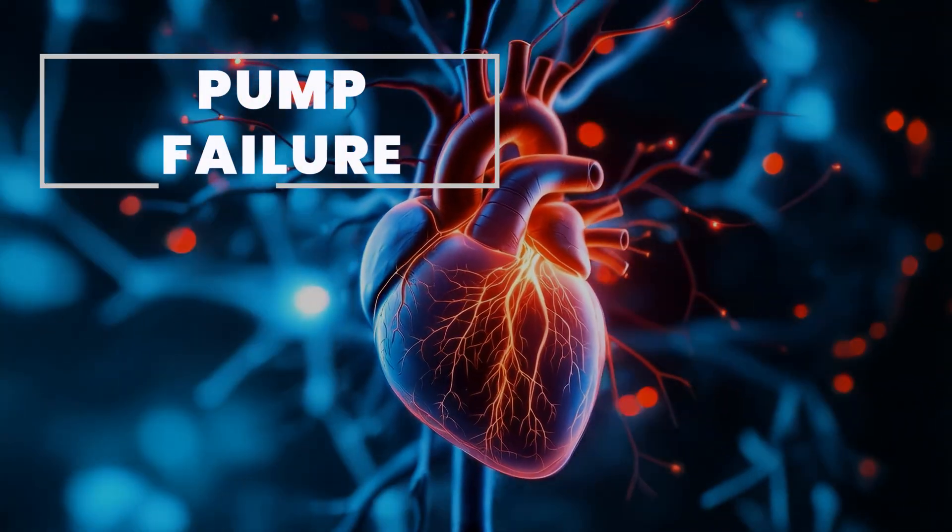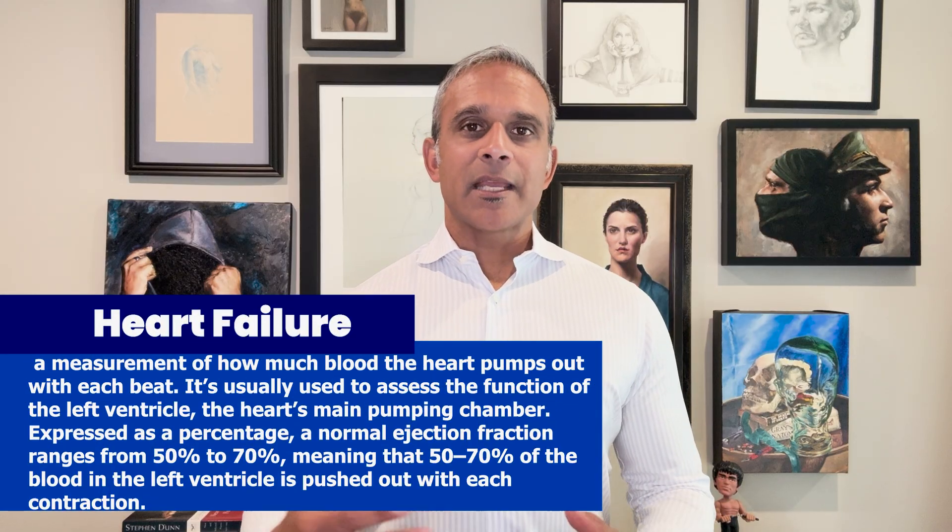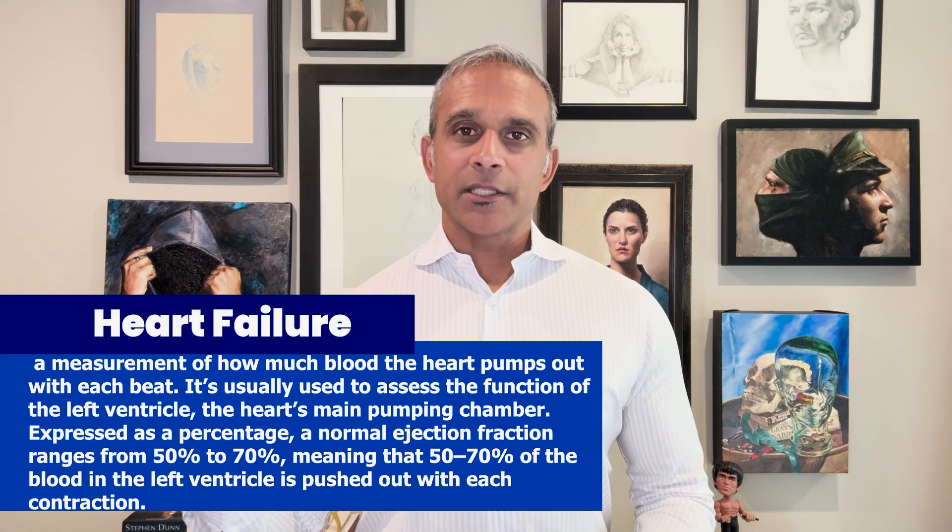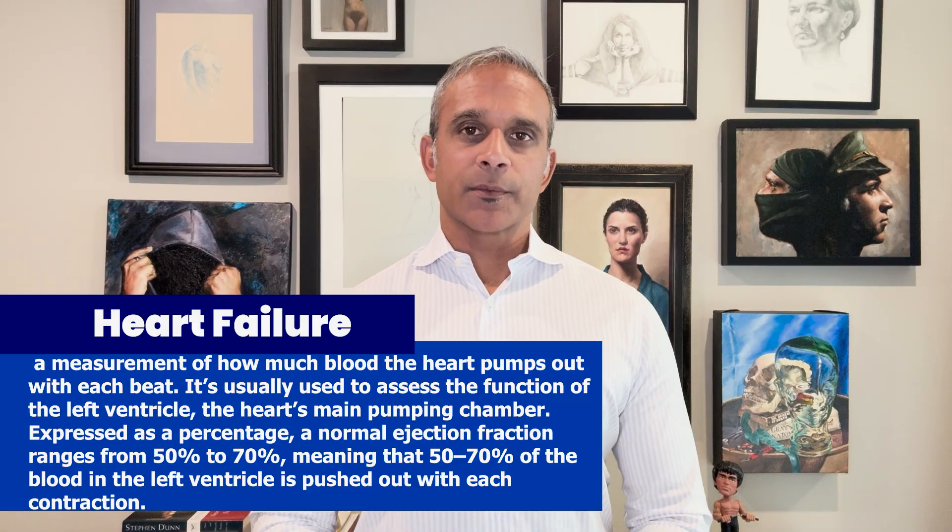The first category I described as pump failure versus inability to relax. The actual term for it is heart failure with reduced ejection fraction versus heart failure with preserved ejection fraction. The central differentiator is ejection fraction — what is an ejection fraction? It is a percentage of the amount of blood that is ejected from the left ventricle at rest. The optimum amount is 55 to 70%.